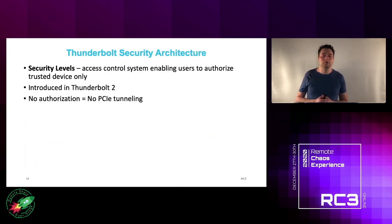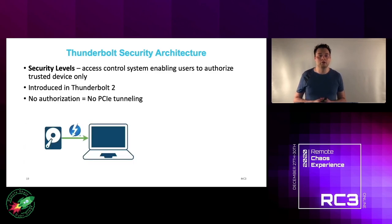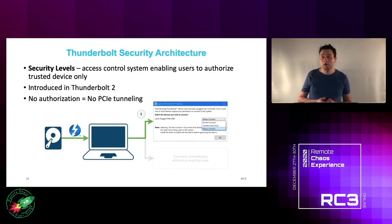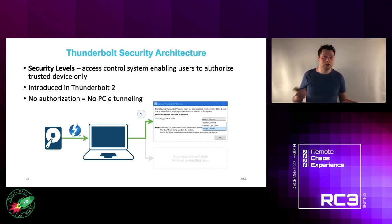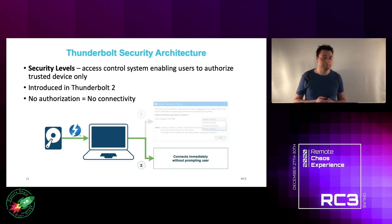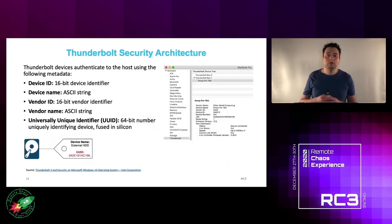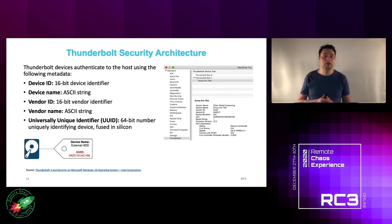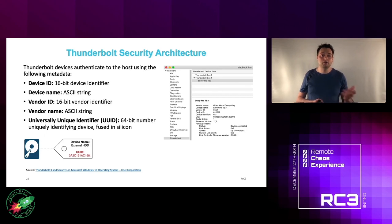Security levels is an access control system. For example, if you attach a Thunderbolt hard drive to your laptop for the first time, you get a pop-up letting you identify and authorize the device. On subsequent connections it works immediately without prompting. Devices authenticate to the host using parameters including the universally unique ID, or UUID, which is intended to uniquely identify any single Thunderbolt device in the world and is defined to be fused in silicon.